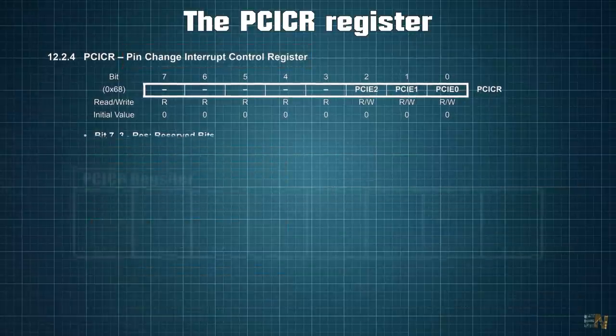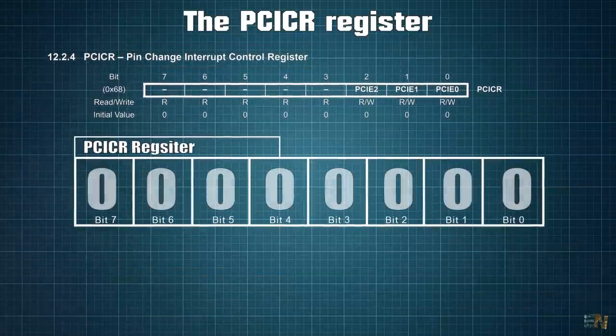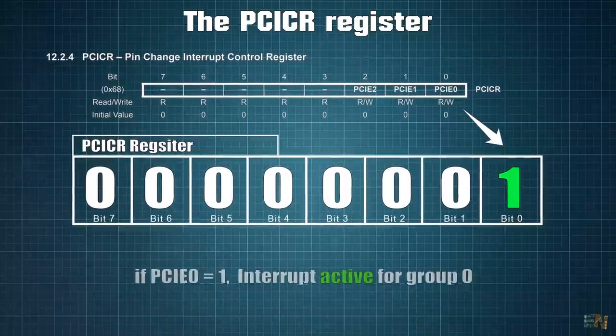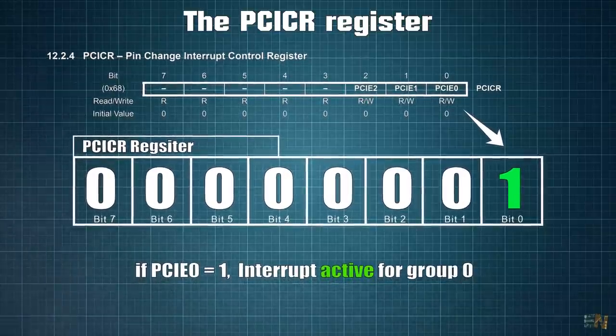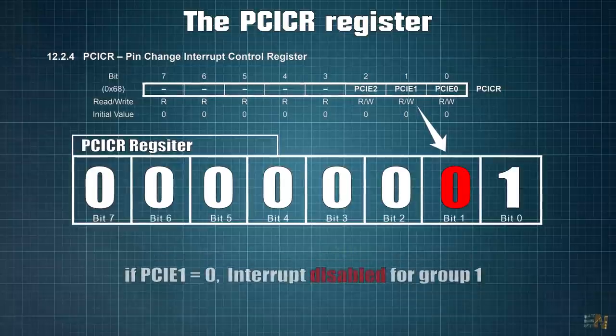These PCIE bits represent the pin change interruption enabled bit. If we set this bit to 1, interruptions for that group will be activated and if we set it to 0, interruptions are disabled.